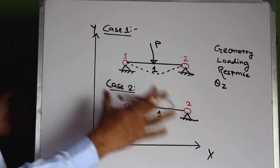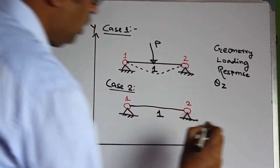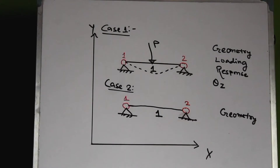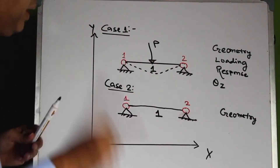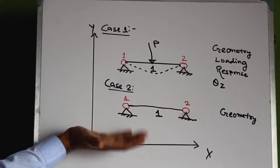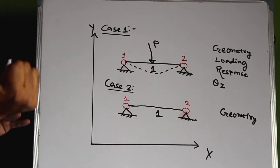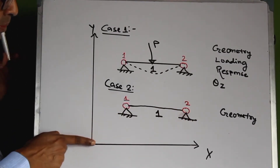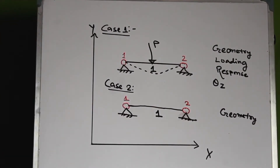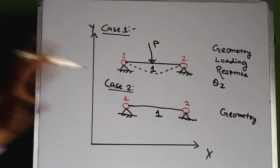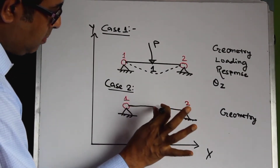Now Case 2 is the same beam whose geometry can be represented in the x-y plane, but this beam is loaded in the negative direction of the z-axis. Using the right-hand thumb rule — if x is this direction and y is this direction — the thumb points towards you, so the positive z-direction comes out of the board towards the camera. The point load is acting on the beam in the negative direction of the z-axis, like this.